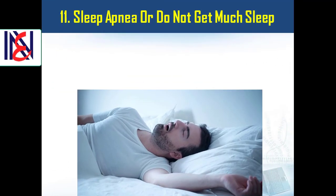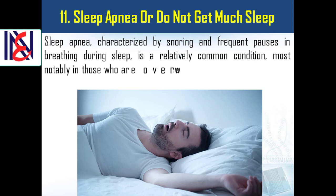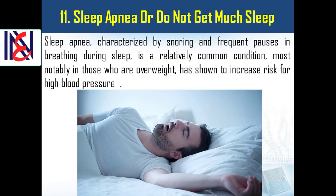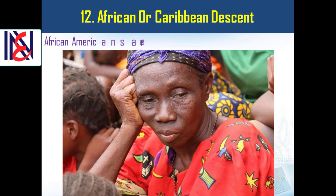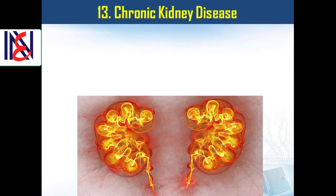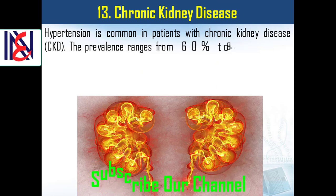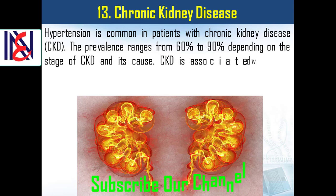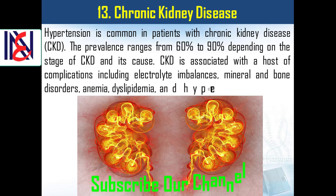Eleventh, sleep apnea. Sleep apnea, characterized by snoring and frequent pauses in breathing during sleep, is a relatively common condition, most notably in those who are overweight, and has been shown to increase risk for high blood pressure. Twelfth, African or Caribbean descent. African Americans are at increased risk for high blood pressure. Thirteenth, chronic kidney disease. Hypertension is common in patients with chronic kidney disease; the prevalence ranges from 60% to 90% depending on the stage of CKD and its cause. CKD is associated with complications including electrolyte imbalances, mineral and bone disorders, anemia, dyslipidemia, and hypertension.